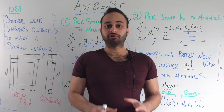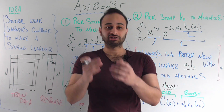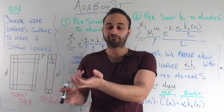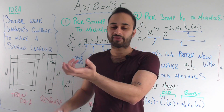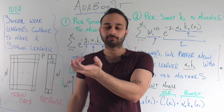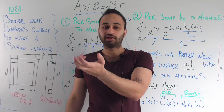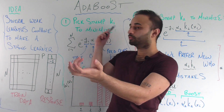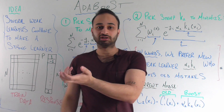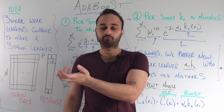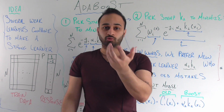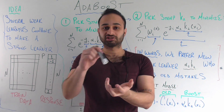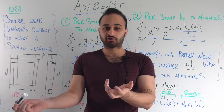And how this AdaBoost proceeds is that at each step you build a weak decision tree. And then you boost that weak decision tree with another weak decision tree, which fixes the mistakes of the first one.